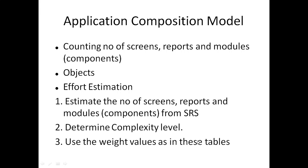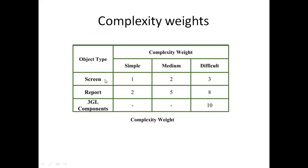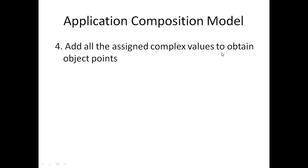We use the complexity weight table. For object types — screens, reports, and 3GL components — we assign weights. If a screen is simple, we give a value of 1; medium gets 2; difficult gets 3. For reports: simple is 2, medium is 5, difficult is 8. For third-generation language components, the value is 10. In the fourth step, we add all the assigned complexity values to obtain the object points. This total sum gives us the object points.